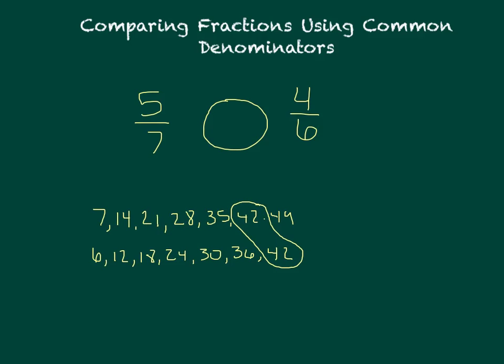42 happens to be their least common multiple. So that means that I'm going to make my bottom numbers, my denominators, 42 on both sides.